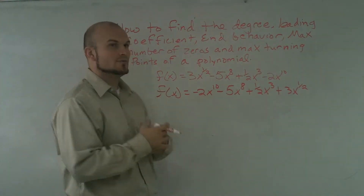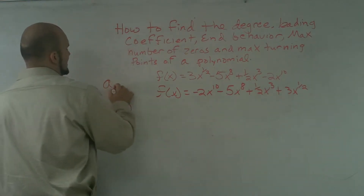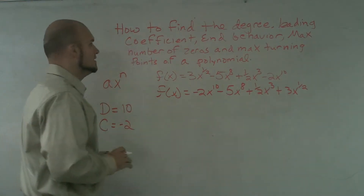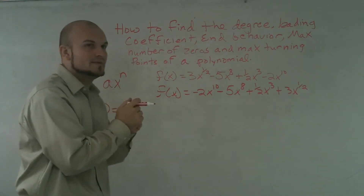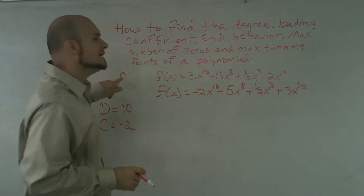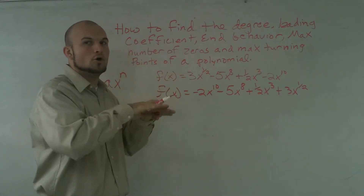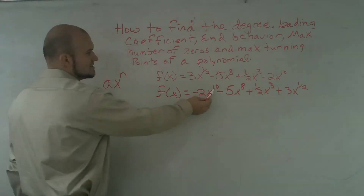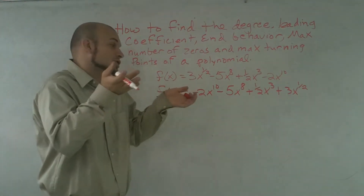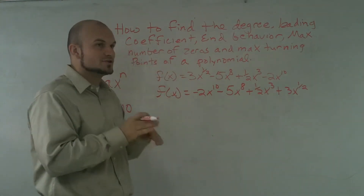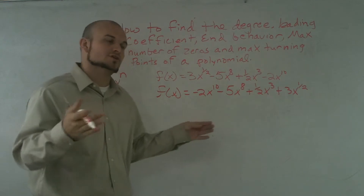Next we need to find the end behavior. We need to remember that for ax^n, both 'a' and 'n' determine the end behavior. When n is even, the graph is going to open both up or both down — meaning as the graph goes to the left and to the right, it goes in the same direction. Our n here is 10, which is even.